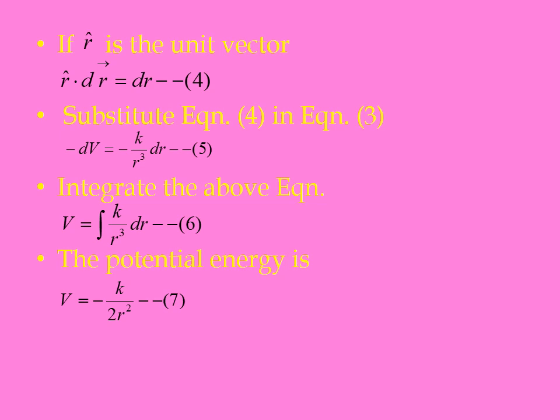You integrate the above equation: V equals integral of k by r cube into dr. The integral of k by r cube dr is nothing but minus k by 2 r square. Therefore, the potential energy is V equals minus k by 2 r square.